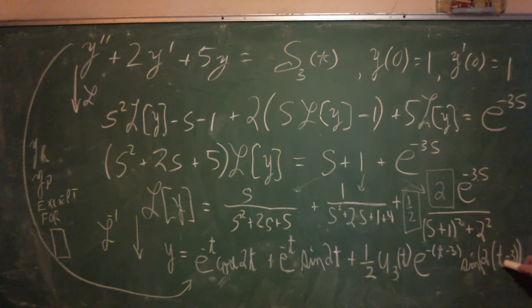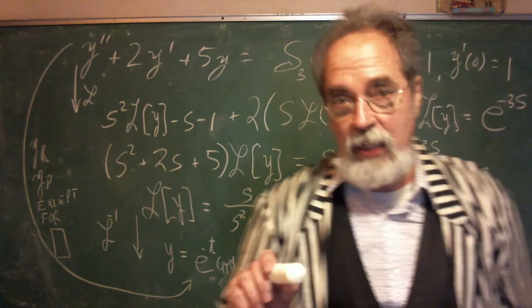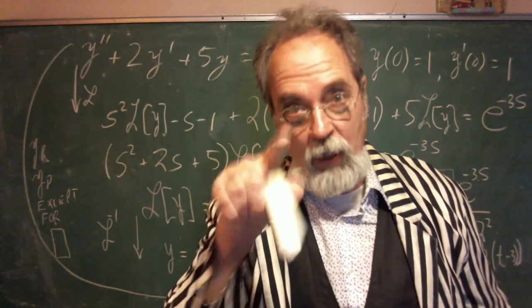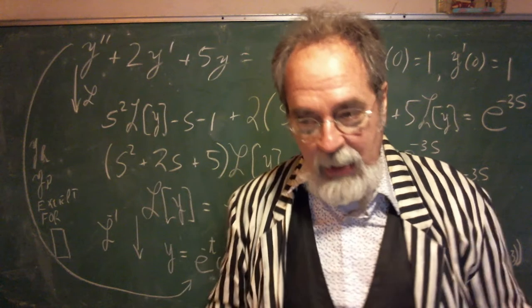So you use the sine for the - pretending this e to the negative 3s isn't there, you'd use sine, but you'd need a 2 there to use sine. So anyway, that's how it goes, that's how you evaluate. You have to practice this. It is not easy to take that last answer and hit it with the inverse Laplace transform. You have to practice and think about it.